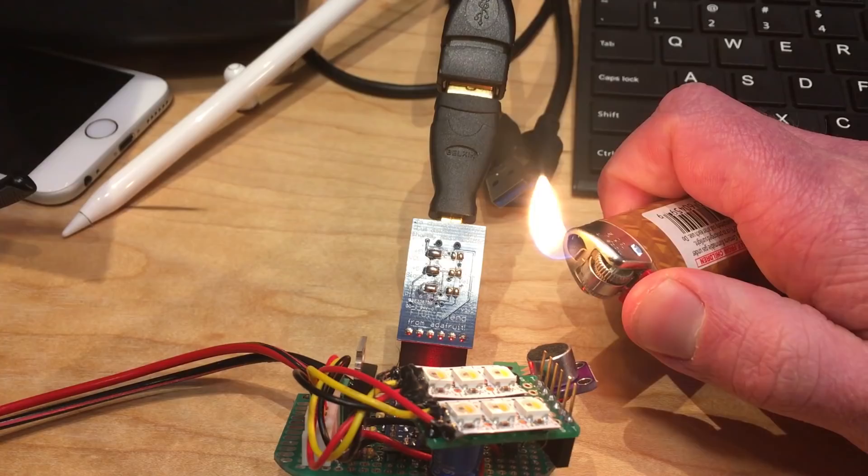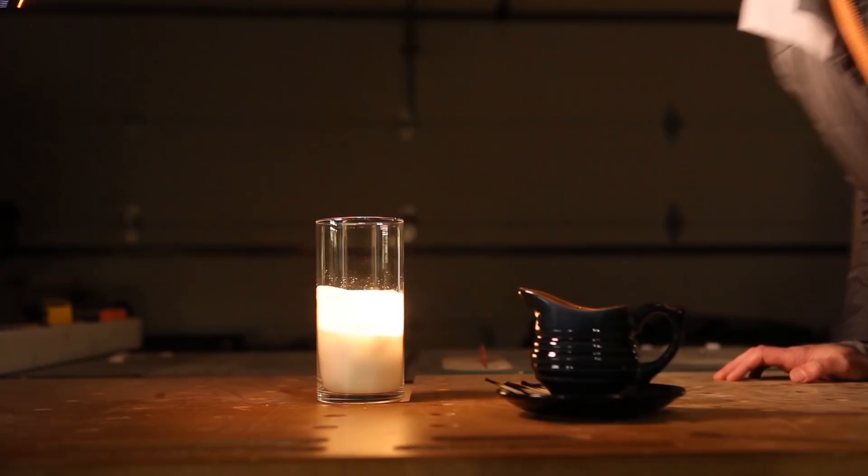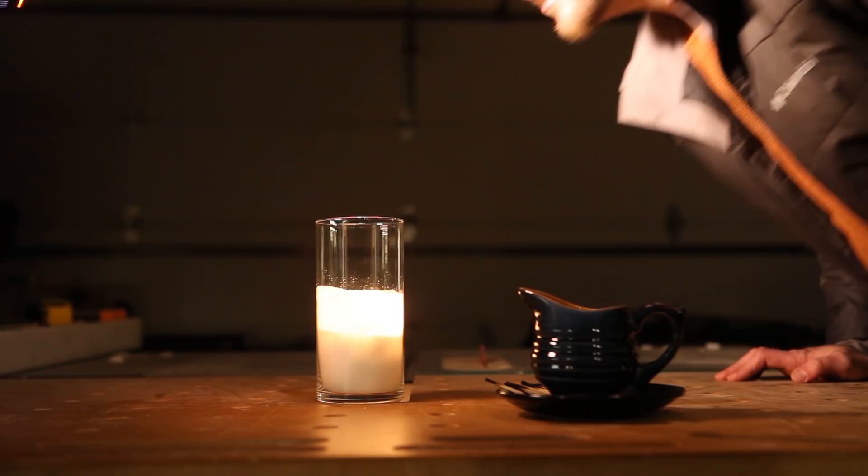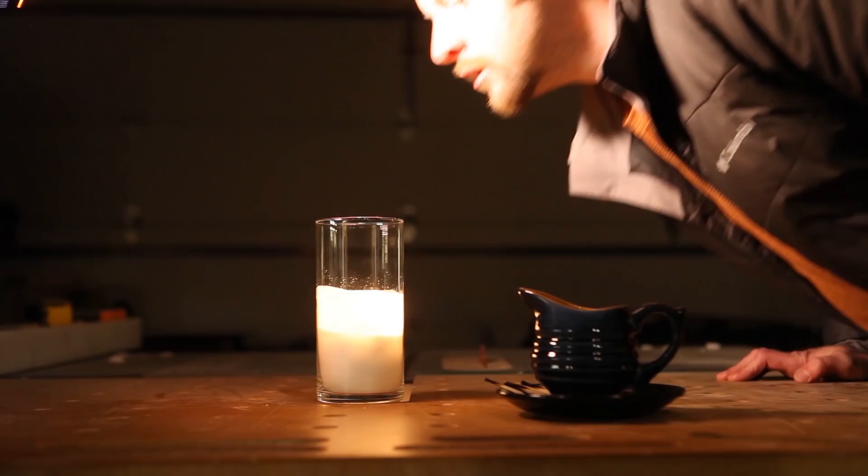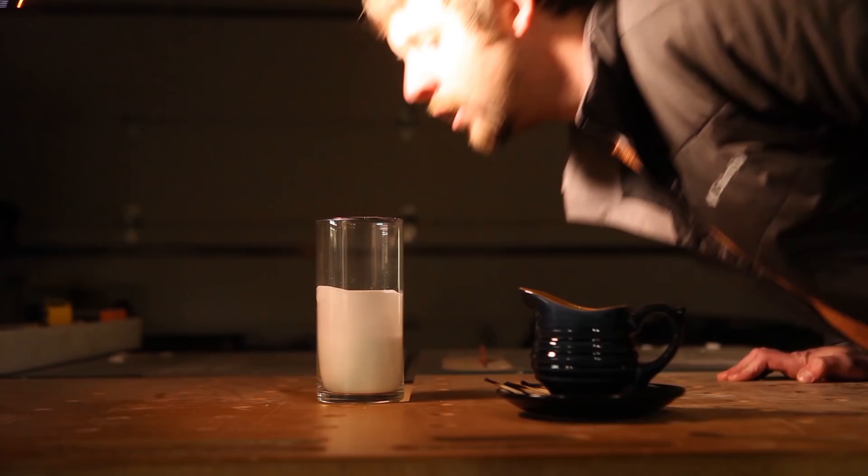So now it's time to blow out the candle, which just happens like that. The candle does turn off pretty much right away. There's a tiny, tiny, tiny delay as the LEDs sort of sequentially turn off, but it's really quick as a candle being blown out is quick, so nothing really fancy there. Until we see the smoke.